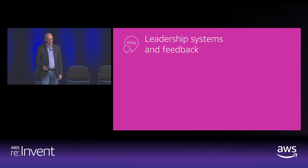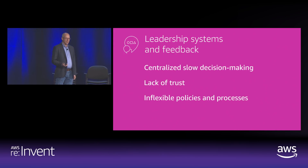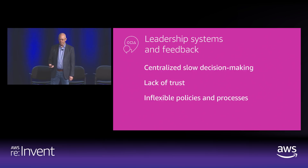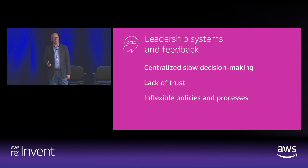Starting with culture: how do you make decisions? Is it centralized, slow decision making? Are you running in a low-trust environment? Do you have inflexible policies and processes? The systems you've built may have been perfectly optimized for the old world where things take a year to do anyway — but how do they work when you're changing things every day? They don't work for that.